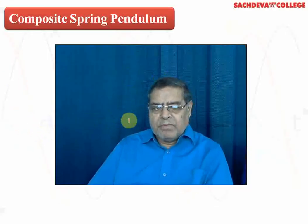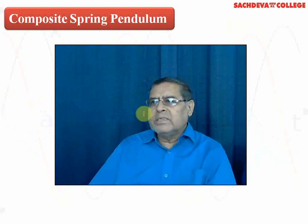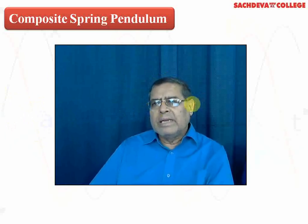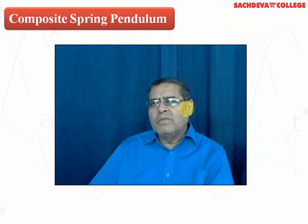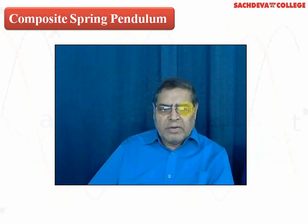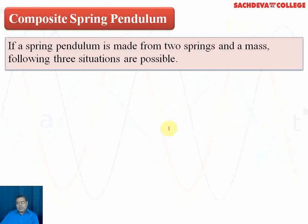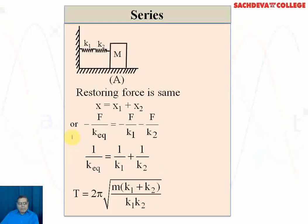Now, composite spring — when we use this term 'composite,' it means we are trying to make various arrangements of springs, like a single spring, two springs in parallel, or two springs horizontally in series. We go through various combinations of springs — this is the meaning of composite spring pendulum. If a spring pendulum is made from two springs and a mass, three situations are possible.